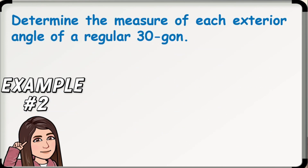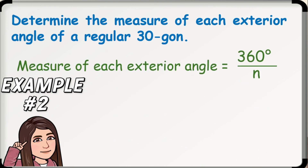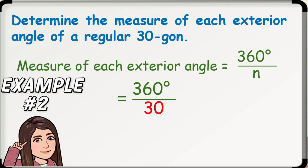Example number 2: Determine the measure of each exterior angle of a regular 30-gon. Since the measure of each exterior angle of a regular polygon with N sides is 360 degrees divided by N, and N is 30, we substitute 30 in place of N. So, 360 divided by 30 is 12. Thus, the measure of each exterior angle of a regular 30-gon is 12 degrees.